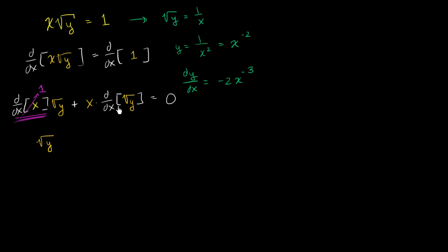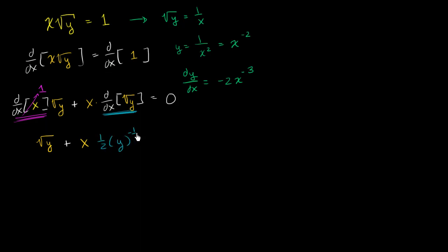And what does this over here simplify to? Well, the derivative with respect to x of the square root of y — here we want to apply the chain rule. It's going to be the derivative of the square root of something with respect to that something, which is 1/2 times that something to the negative 1/2 power. This is the derivative of the square root of y with respect to y.